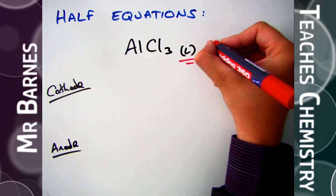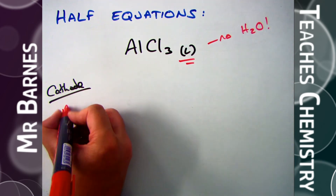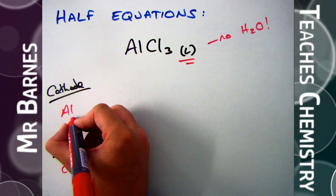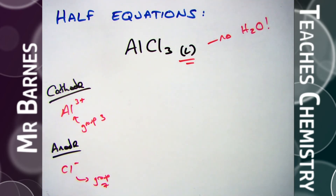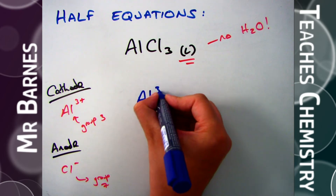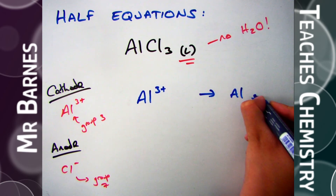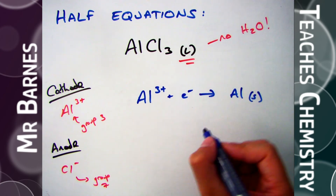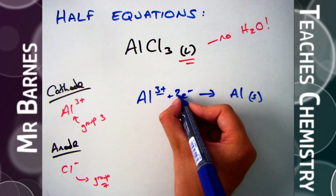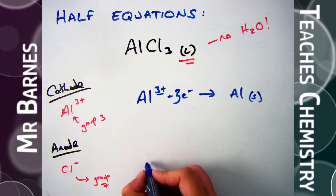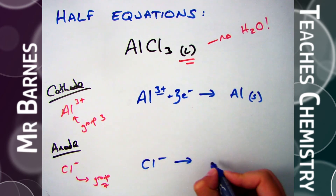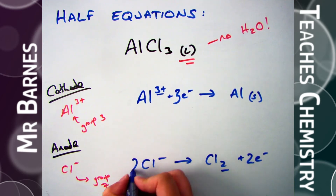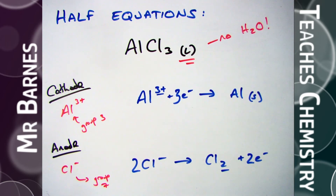Finally, a molten example — aluminium chloride. There's no water, so the only things formed are aluminium and chlorine. At the cathode, starting with Al³⁺ going back to aluminium, I need to add three electrons: Al³⁺ + 3e⁻ → Al. At the anode, starting with Cl⁻ going to Cl₂ — chlorine is diatomic — and taking an electron away. Two chlorines means two Cl⁻ ions and therefore two electrons: 2Cl⁻ → Cl₂ + 2e⁻.